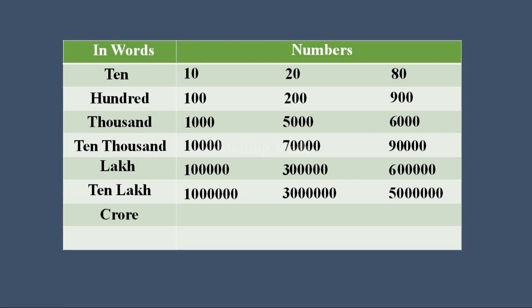Next, crore — crore means there should be 7 zeros. For one crore, write 1 then 7 digits of zero. A number which has 7 digits of zero comes under crore. If someone asks you to write 7 crore, write 7 then 7 zeros. If someone asks you to write 9 crore, write 9 then 7 digits of zeros — it becomes 9 crore.